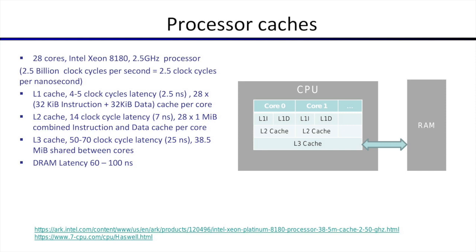The L1 cache is part of the core, so every core has its own L1 cache. In this Intel processor there are 28 cores, so each of those 28 cores has an L1 cache. The total L1 cache is 28 times 64 kilobytes, but each core only controls its own cache.